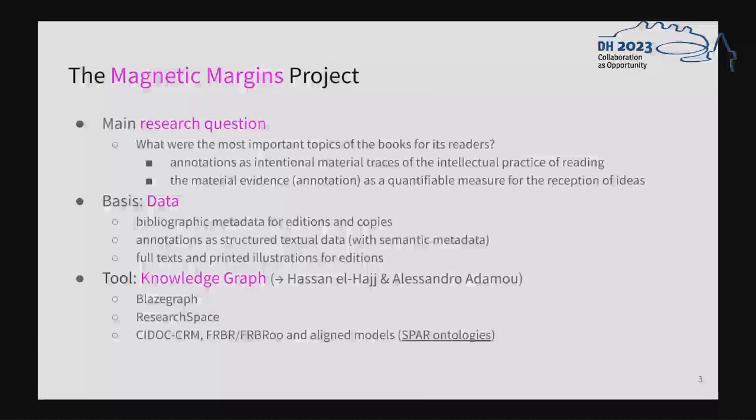The data underlying this approach consists in roughly 700 individual printed copies of a few early modern editions that all focus on the subject of magnetism. We extracted bibliographic metadata for all these editions and copies. We recorded annotations as structured textual data, relying on a controlled vocabulary, and we ingested all the full texts of these editions and the metadata for illustrations that are printed in these books.